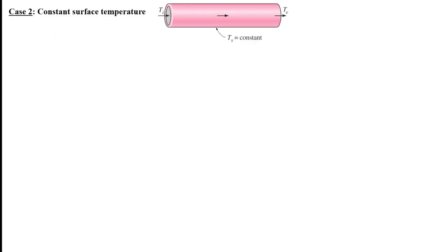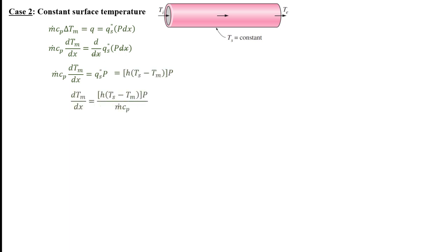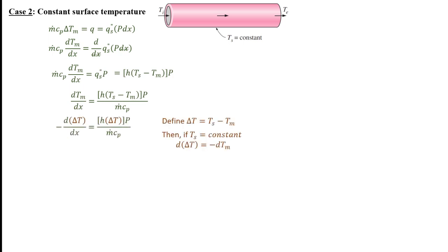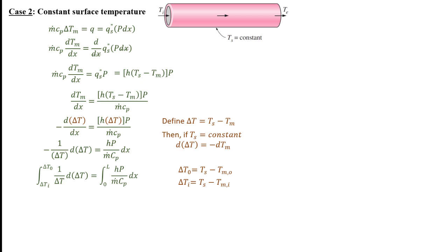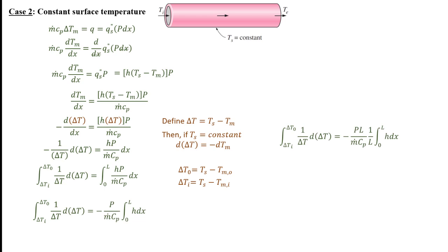Now let's look at the different case of a constant surface temperature — for instance, if a substance flows over the pipe while undergoing a constant-pressure, constant-temperature phase change. We define the heat transfer rate as before, take the derivative of both sides with respect to x, and define the heat flux using Newton's law of cooling. Dividing both sides by ṁCp and introducing delta T as Ts minus Tm, if the surface temperature is constant, the derivative of delta T is just the negative of the derivative of the mean temperature. Separating variables and integrating — delta T from inlet to outlet on the left, 0 to L on the right — the constants come out of the integral with the local heat transfer coefficient remaining inside. Multiplying the right side by L/L reveals the formula for the average heat transfer coefficient.